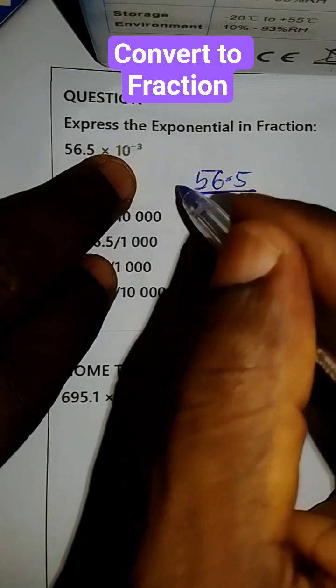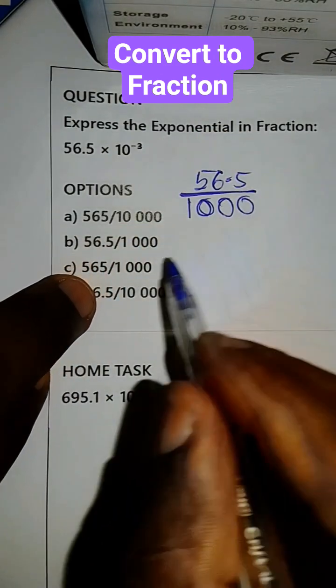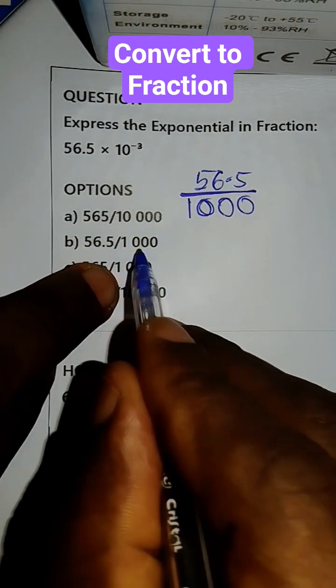How many zeros do we put? Three, because it is 3 here. So we already have our answer here.